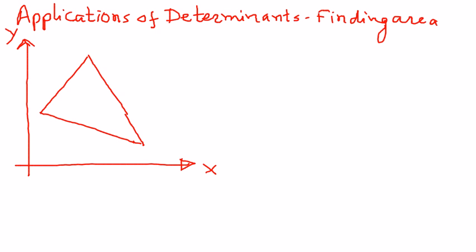If that is a graph, this point here is x1, y1, and then this point here is x2, y2.